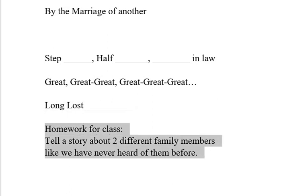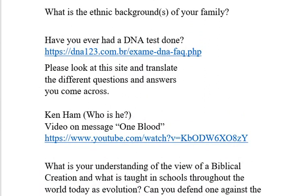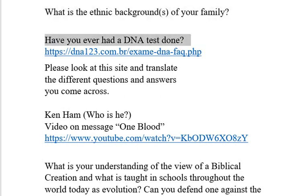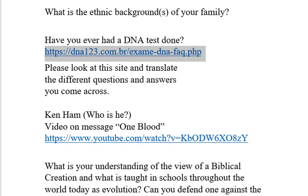For homework, I ask that you tell a story about two different family members as if we have never heard of them before. It can be any family member by blood, by marriage, or the marriage of another. What is the ethnic background or backgrounds of your family? Mine is Scotch-Irish from Scotland and Ireland, but I could have many ethnicities. How do you discover this? You have a DNA test. Have you ever had a DNA test done? There is a site here you can look to about DNA tests — you can order them online or check in your city.